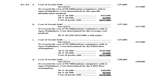Part C requires the FIFO assumption, which means we sell those units first that were purchased first. The 70 units were taken from the previous purchase and 20 units from the latest purchase, giving a total cost of goods sold of $137,000.